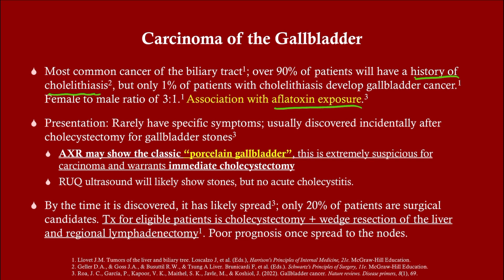These patients rarely have specific symptoms, and that's a problem — if you don't develop symptoms until you have metastasis, you're in trouble. Abdominal X-ray could show the porcelain gallbladder, which is probably the biggest association that gets tested. Right upper quadrant ultrasound may show stones, which is common because these patients often have a history of cholelithiasis, but not acute cholecystitis — that is not associated with gallbladder cancer.